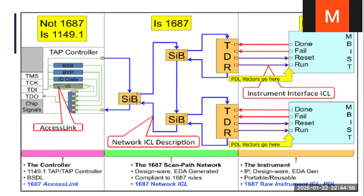Good morning everyone. Today we are going to discuss JTAG and iJTAG. The basic difference between JTAG and iJTAG is that in the case of iJTAG we have a Segment Insertion Bit (SIB). The ICL description connects this SIB. The next element is the TDR, which we find in JTAG — but we won't find the SIB in JTAG; SIB is only in iJTAG.